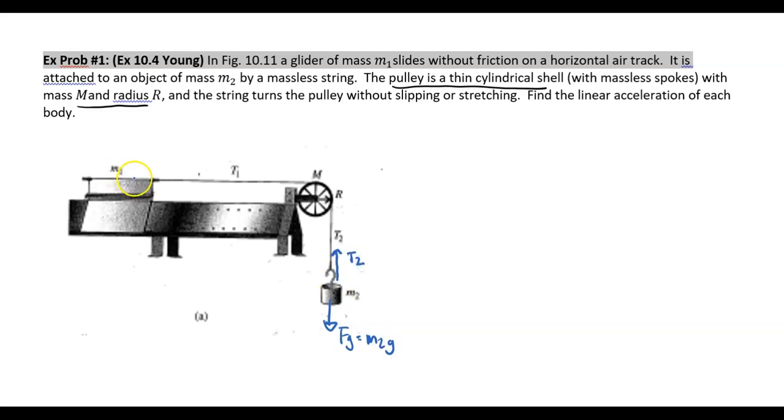On the other one, which is M1, we're going to have FG, which is M1G pushing down on it. We're going to have normal force pushing up. We're going to have tension pulling to the right.